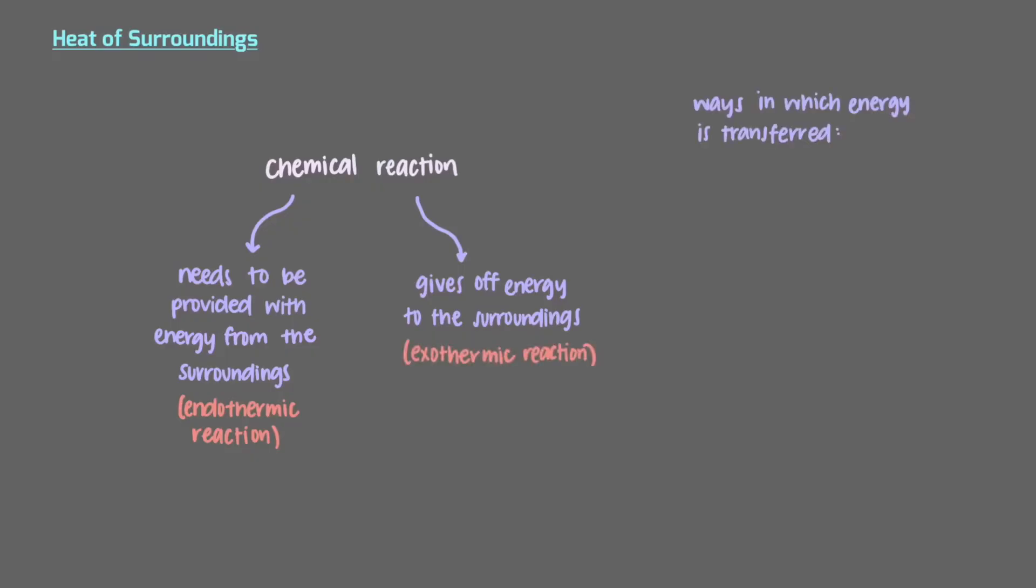There are two ways in which energy can be transferred between the system and surroundings: heat and work. We'll focus on heat in this video. We denote the amount of energy transferred as heat by q. When a system gains energy as heat, the value of q of the system is positive.